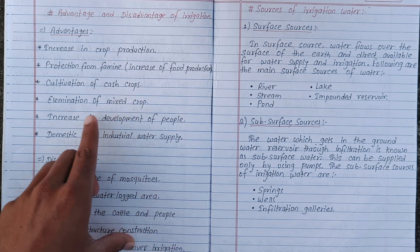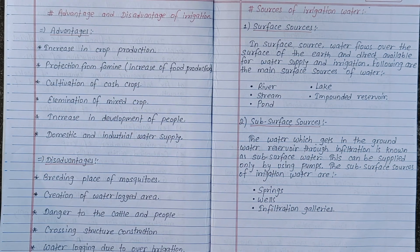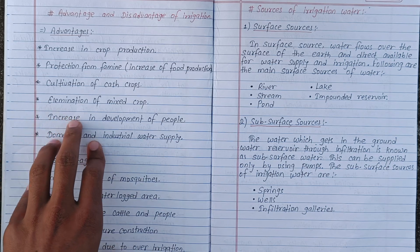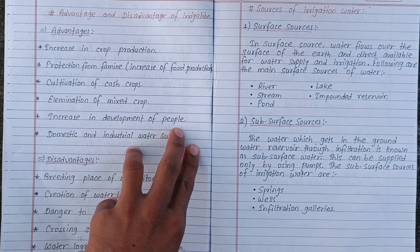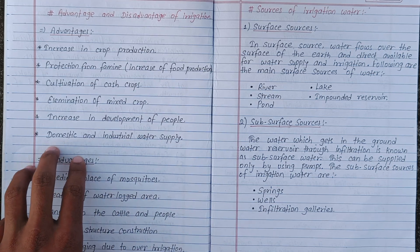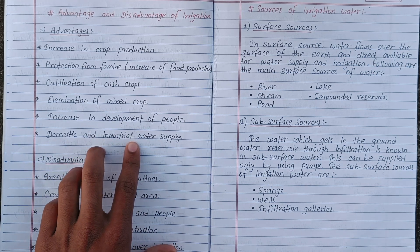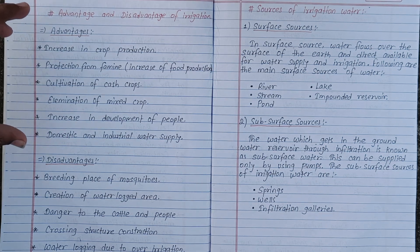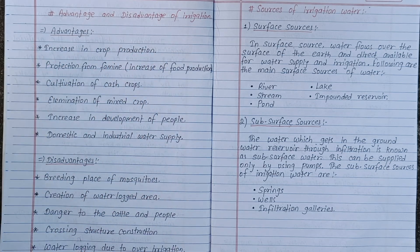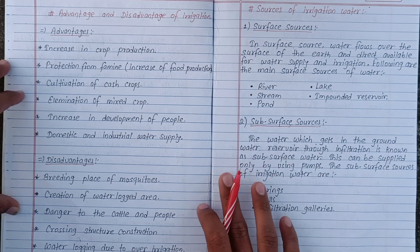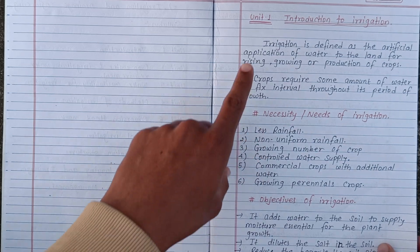One advantage is the elimination of mixed crops — we can give more focus to specific crops. There is also an increase in the development of people and increased demand for domestic and industrial water supply. We also have to use irrigation effectively. This is an advantage of irrigation. Another advantage relates to sub-surface water sources.